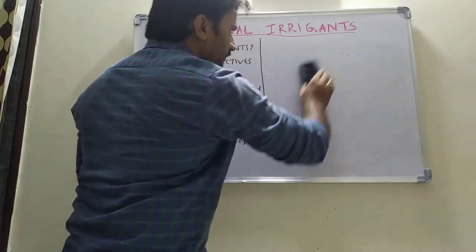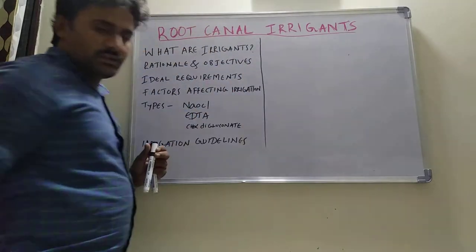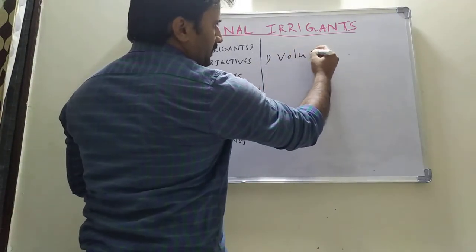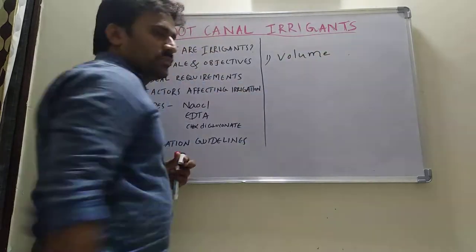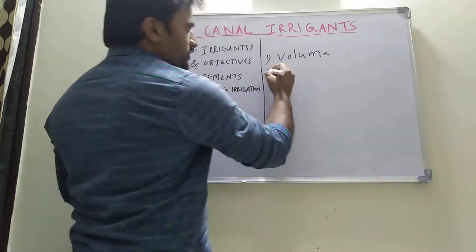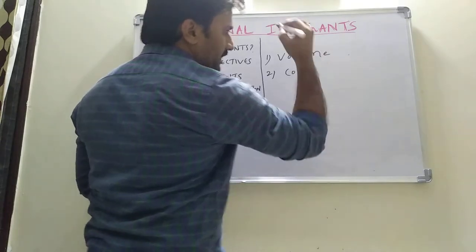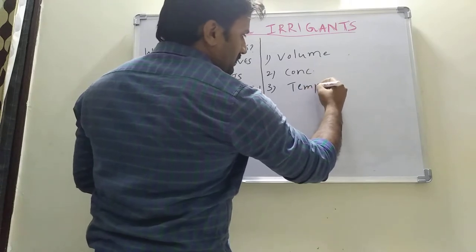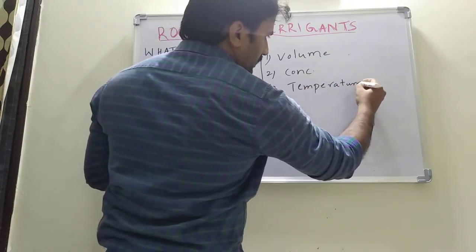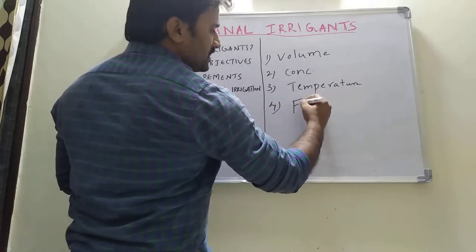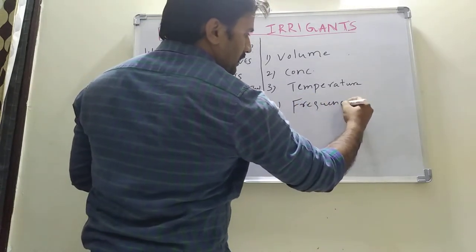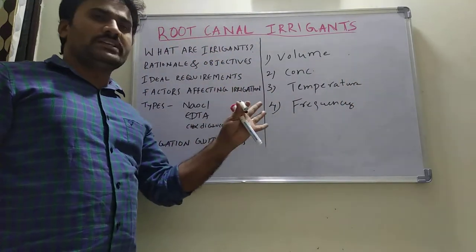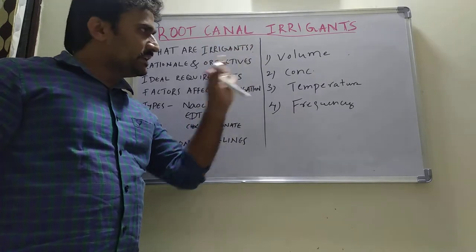The factors affecting the efficacy of irrigation are four main things: one is the volume of the irrigant, second is the concentration of the irrigant, third is the temperature of the irrigant, and fourth is the frequency of irrigation. These four main factors determine the efficacy of the irrigation procedure.